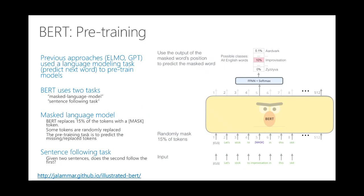In terms of pre-training, previous models like ELMo and GPT use language modeling tasks — predicting the next word. But BERT uses masked language model (MLM) and a sentence following task. In the masked language model, you mask a word like 'improvisation', send it to the BERT model through a feed-forward network and softmax, and it predicts the masked word with a probability. BERT replaces 15% of tokens with a mask, and some tokens are also randomly replaced. The pre-training task is to predict the missing or replaced tokens.